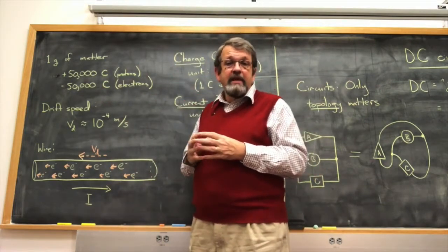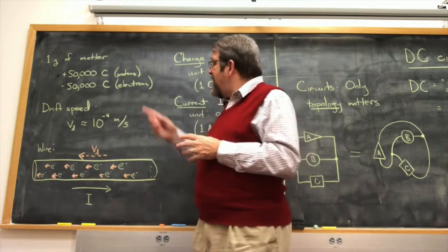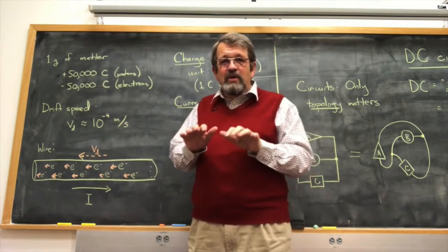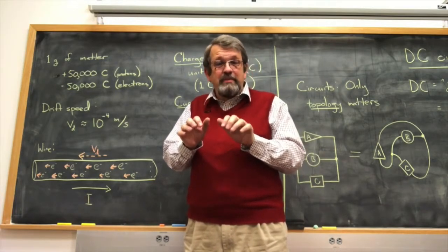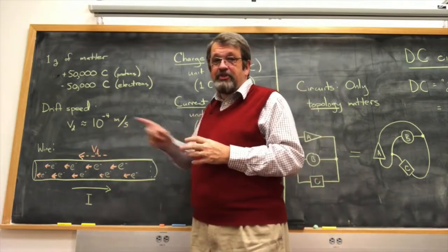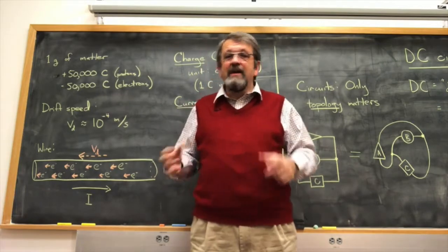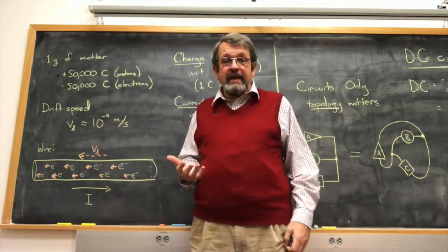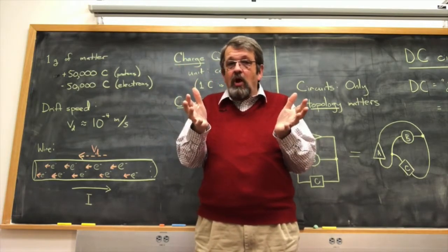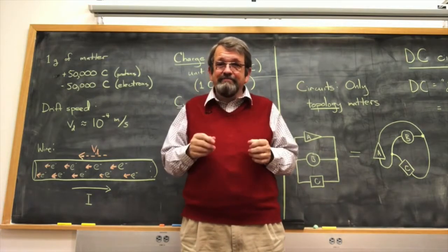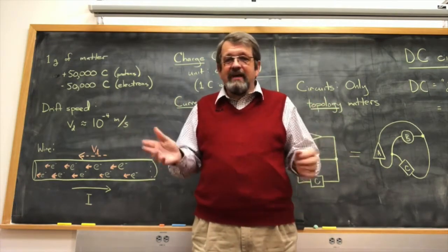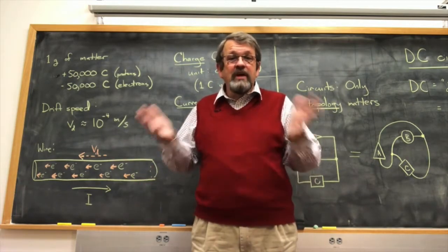To make current flow in a wire, electrons don't have to move very fast to have an enormous amount of charge passing a point. The drift speed of electrons in a current-carrying wire is about 10 to the minus fourth meters per second — a tenth of a millimeter per second. This is just the overall average drift; the individual electrons are actually moving at thousands or even hundreds of thousands of meters per second in all directions, like a swarm of bees flying every which way while the swarm itself barely moves.